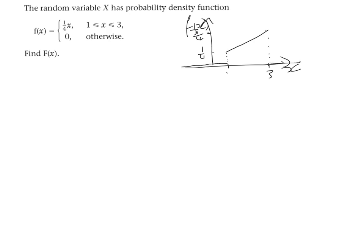To find the cumulative distribution function, denoted by capital F(x), we have to integrate our function between our lowest limit and x — not our upper limit, because that would just give us the total area of 1. So we integrate between 1 and x, where x is an unknown point on our graph. Whatever we get from that integration will be our cumulative distribution function.